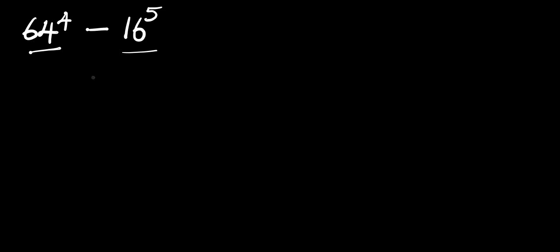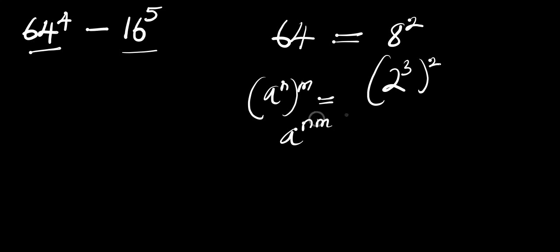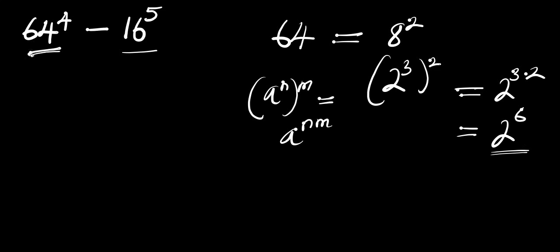Now, 64 is a perfect square which equals 8 squared. And 8 is simply 2 to the power 3, raised to the power of 2. Using the identity (a^n)^m = a^(n×m), this gives us 2^(3×2), which equals 2 to the power 6. So 64 is the same thing as 2 to the power 6.